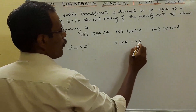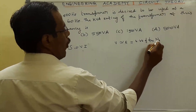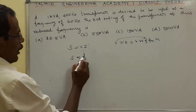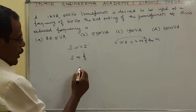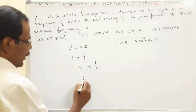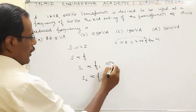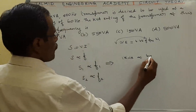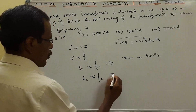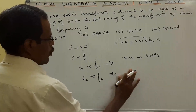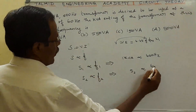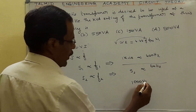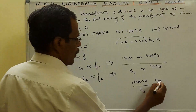We know that E1 = 4.44 × F × phi_m × N1, therefore V is proportional to F, and therefore S (kVA) is proportional to F. So S1/S2 = F1/F2. That means 1 kVA / S2 = 400 / 60. Therefore S2 = 1 × 60 / 400.